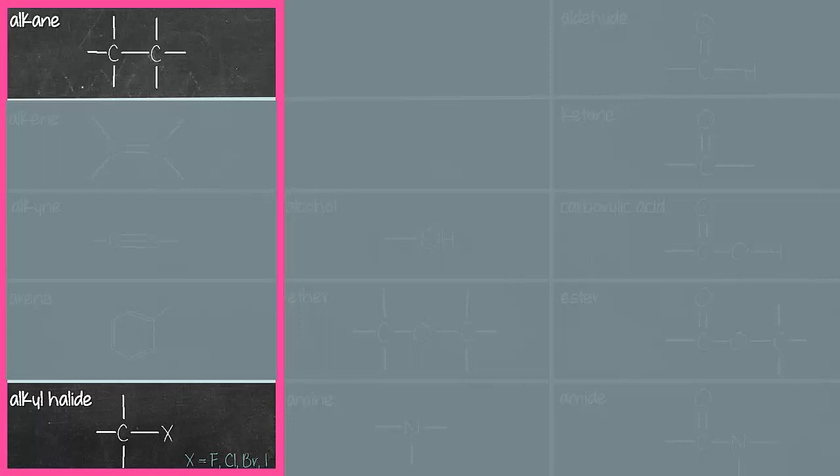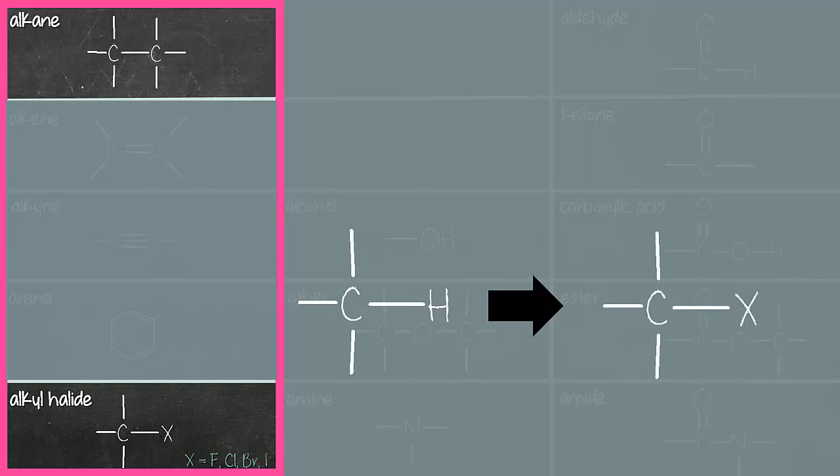Then we have alkyl halide, which is the hydrocarbon derivative. It's actually an alkane, except it's missing one hydrogen, and that's replaced with a halogen like fluorine, chlorine, bromine, and iodine.